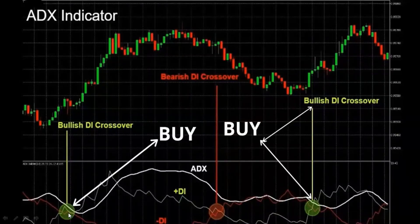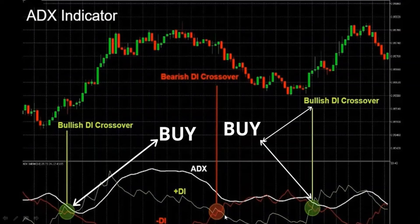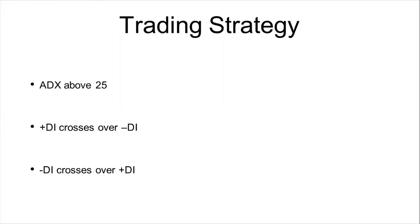Here in this area there's a bullish DI crossover — the Positive DI crossed over the Negative DI — and hence we go long here and we see a good rally. Next, here you see there's a bearish DI crossover, and again here a bullish DI crossover, and a bearish DI crossover here because the Negative DI has crossed above the Positive DI. You can see the red line has moved above the green line.